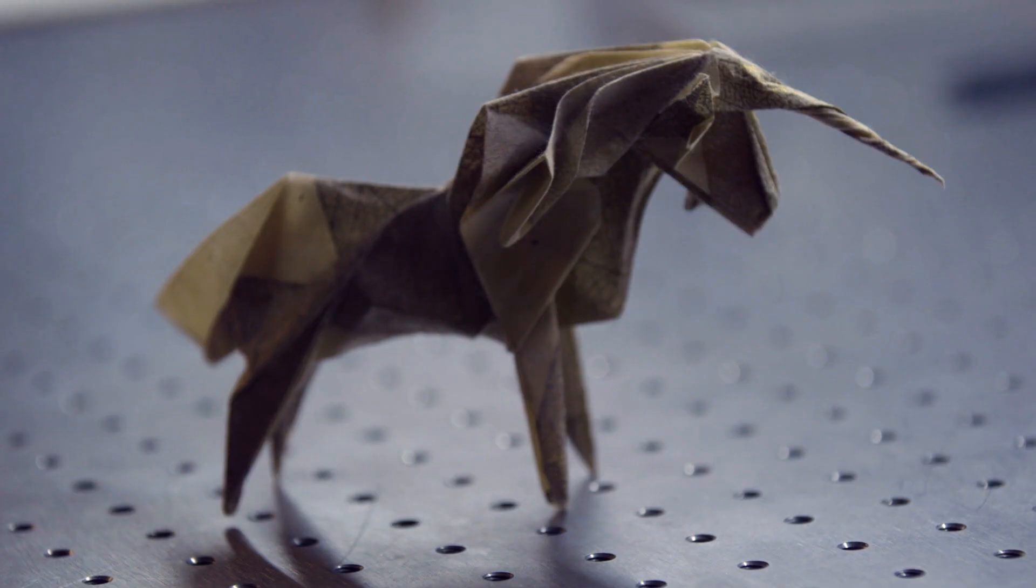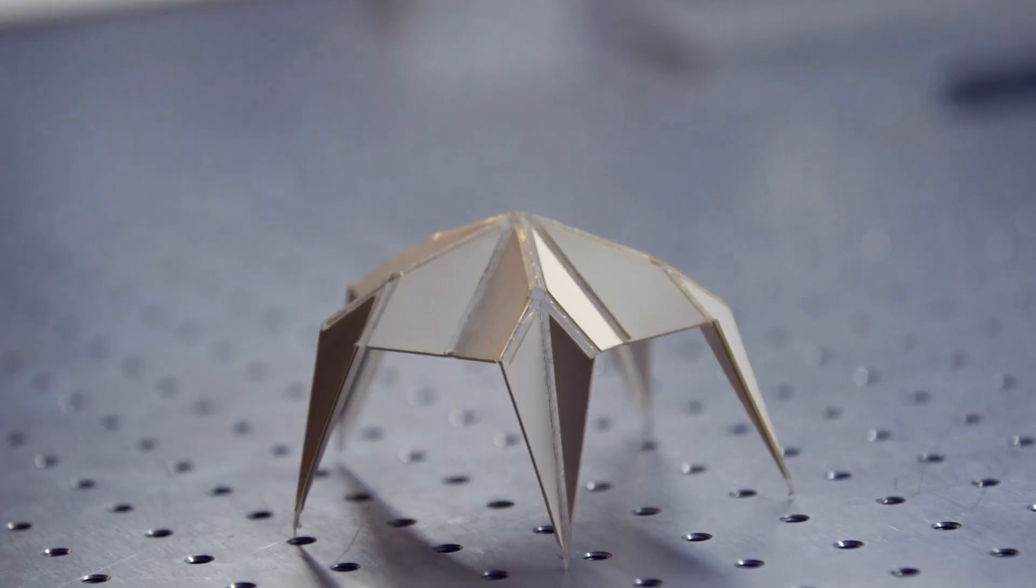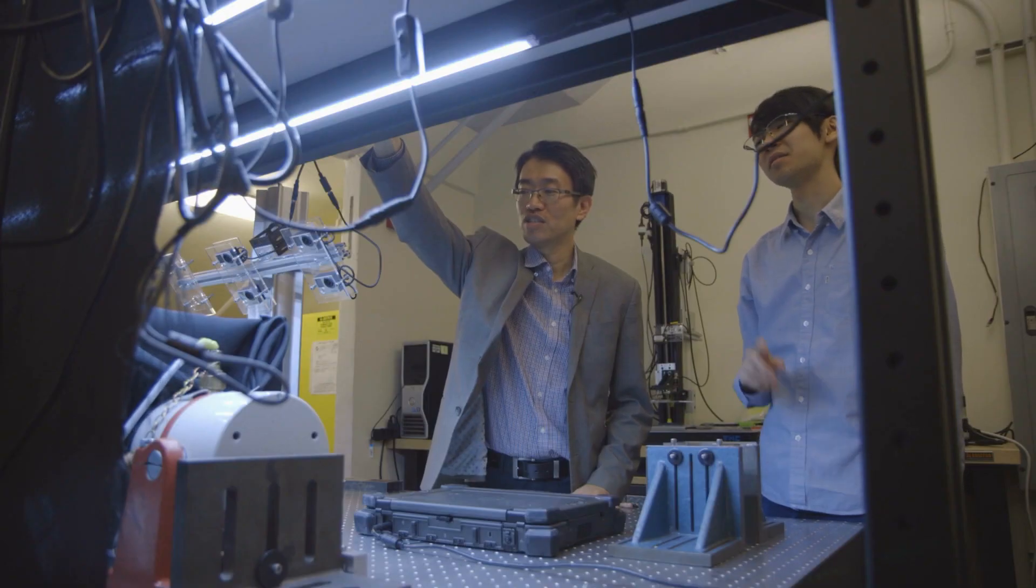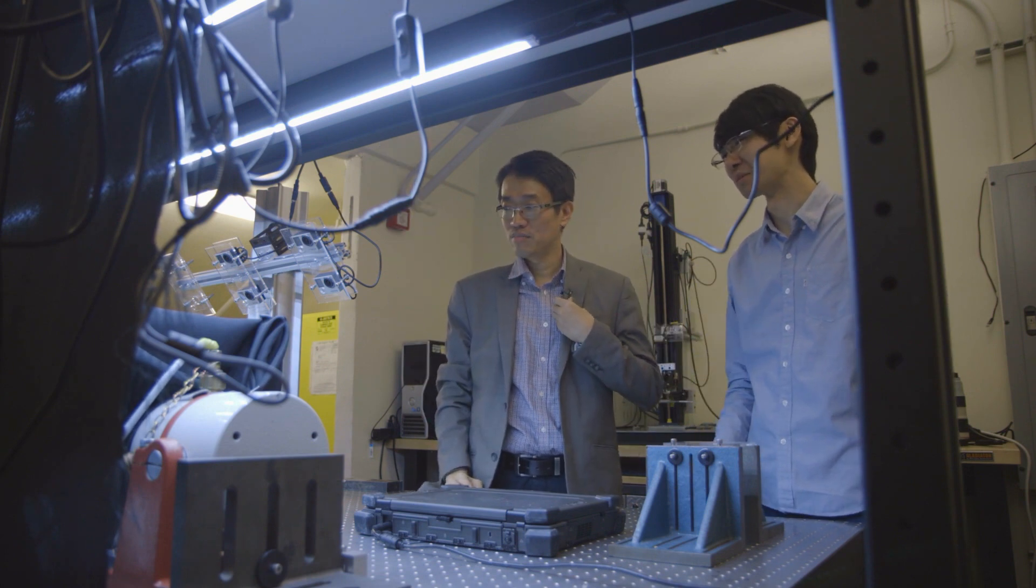My five-year-old daughter, she loves folding paper. So I basically work with her, and we do origami together. This is something that I really like about origami. It enables me to connect with people around me.